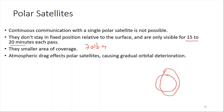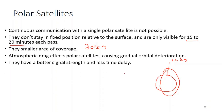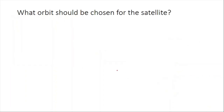Atmospheric drag affects polar satellites, causing gradual orbital deterioration. Since polar satellites orbit at around 700 kilometers, they are within the upper atmosphere. Even though air density is very low at that altitude, after several years of operation the cumulative effect of atmospheric drag becomes visible. On the positive side, they have better signal strength because they are closer to earth, and less time delay.